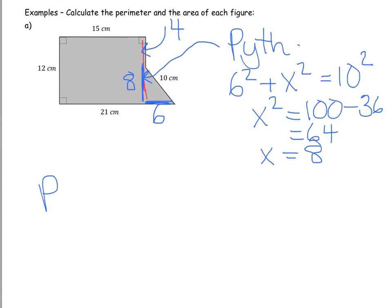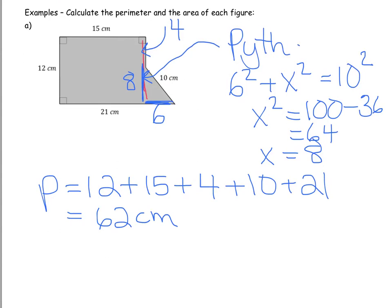So for our perimeter, all we have to do then is just add up all the sides. I do like you to write out the step where you add up all the sides, just in case you make any kind of silly mistakes, then I can give you part marks. So we had 12 plus 15 plus 4 plus 10 plus 21. And really quickly, we can add that up. And of course, that equals 62 centimeters. We do have to have units on that when we do add that up together. So that's nice and simple for the perimeter.